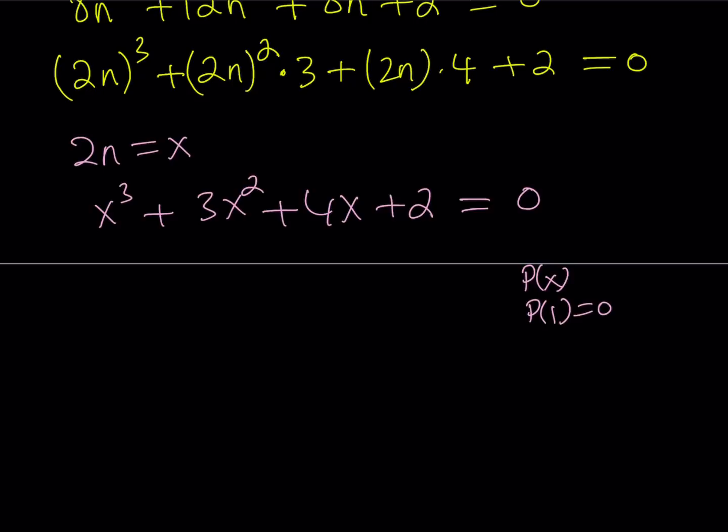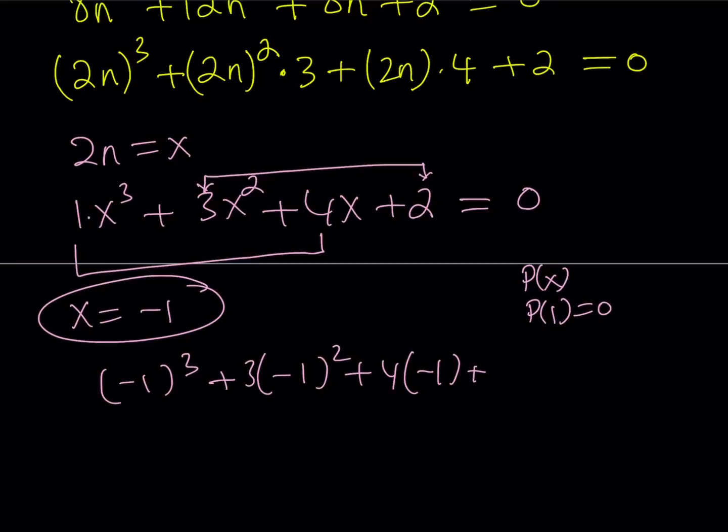But we can also check for x = -1. You take a look at the coefficients of the odd powers and the coefficients of the even powers. If they add up to the same number, then x = -1 is a solution. And yes, x = -1 satisfies this equation.